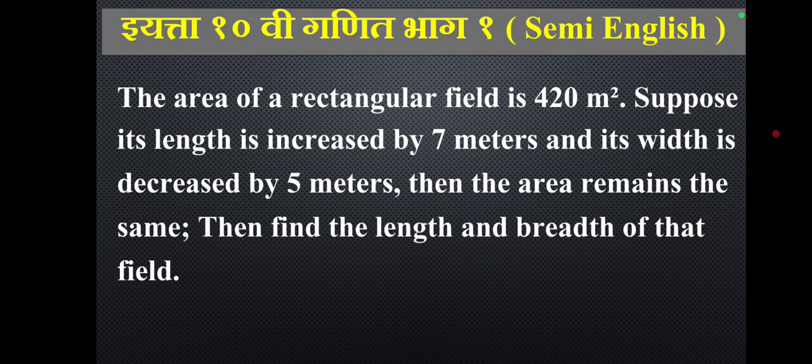The area of a rectangular field is 420 square metres. Suppose its length is increased by 7 metres and its width is decreased by 5 metres, then the area remains the same. Find the length and breadth of that field.